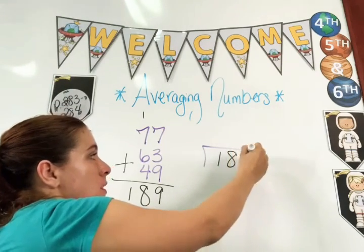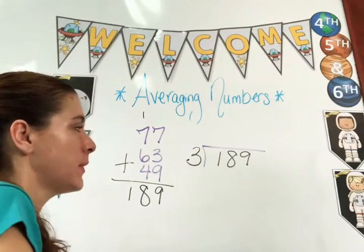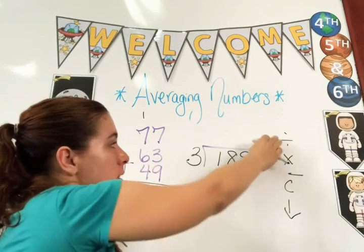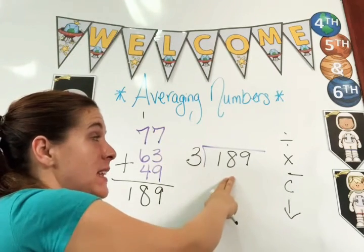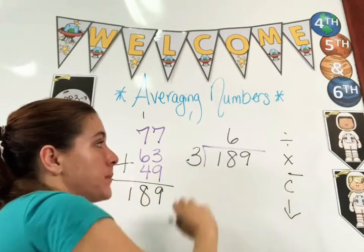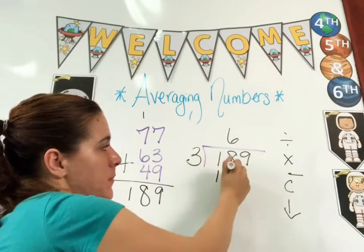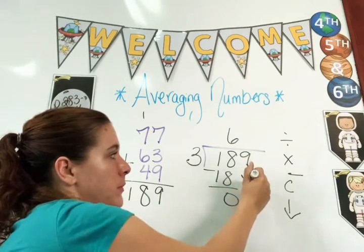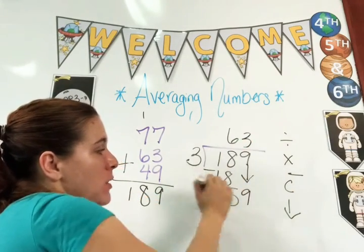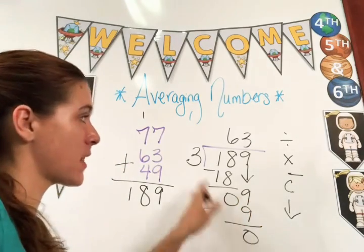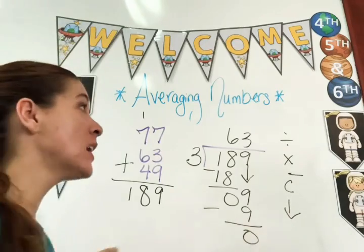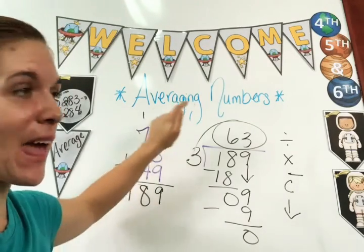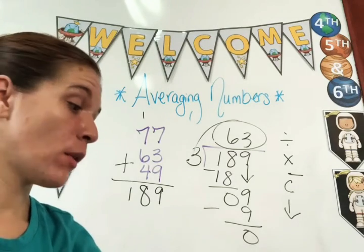Put that over here. What are you going to divide by? You have three numbers — divide by 3. Can 3 go into 1? No. Can 3 go into 18? Yes — 18 divided by 3 is 6. Six times 3 is 18. 18 minus 18 is 0. Bring down 9. 9 divided by 3 is 3. Three times 3 is 9. 9 minus 9 is 0. Can you bring any more down? No. So your average is 63 — a number right in the middle. That's your answer for number one, letter A.